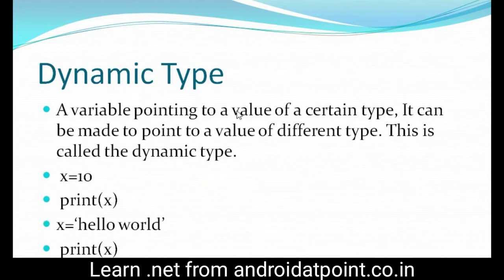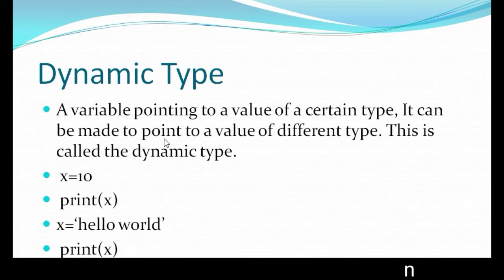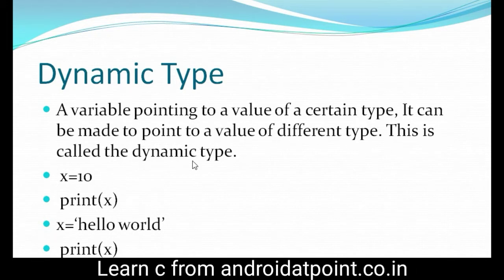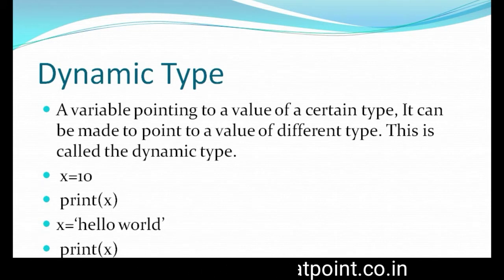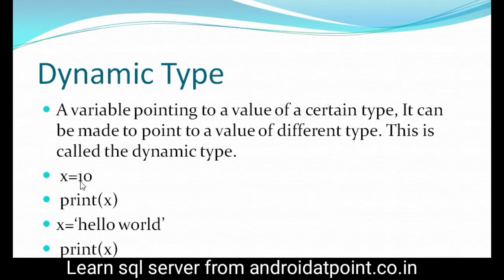Now, dynamic type — a variable points to a value of a certain type but can be made to point to a value of a different type. This is called dynamic typing. For example, I declare a variable x and assign the value 10. At this point, 10 is an integer type value stored in x.